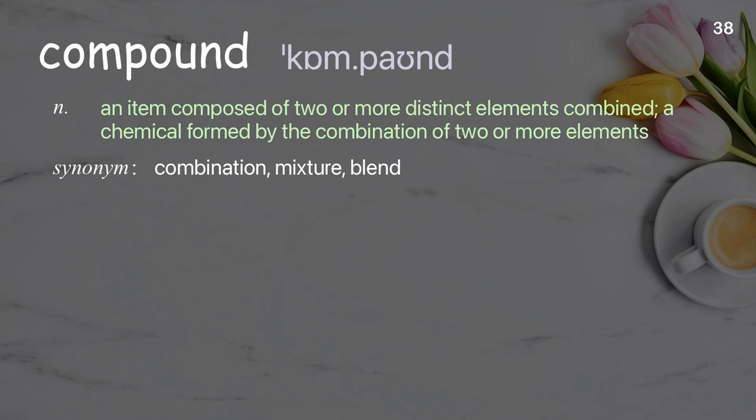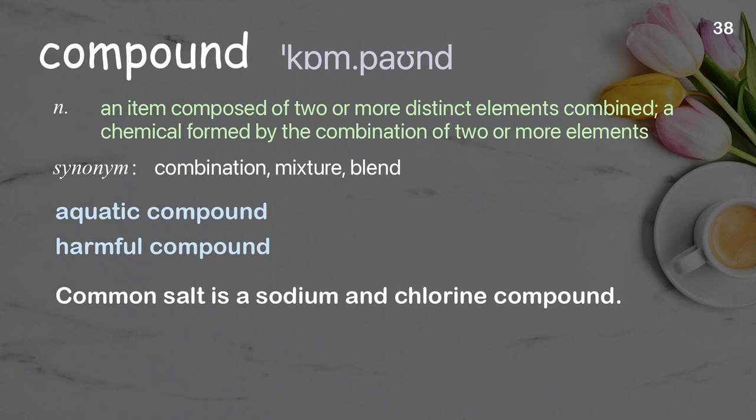Compound: an item composed of two or more distinct elements combined; a chemical formed by the combination of two or more elements. Examples: aquatic compound, harmful compound. Common salt is a sodium and chlorine compound.